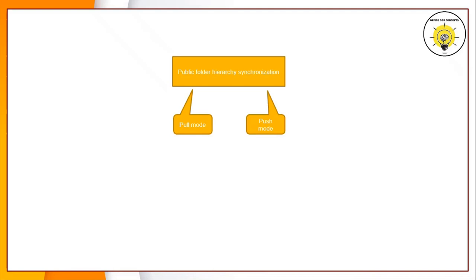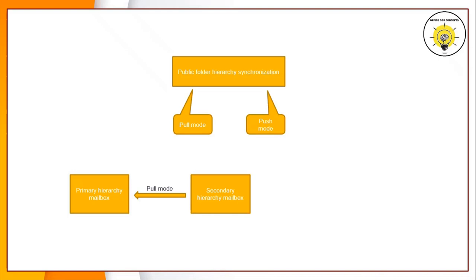The public folder hierarchy synchronization is divided into two categories: pull mode and push mode. In pull mode, hierarchy replication is driven by secondary hierarchy mailboxes. At a regular interval, the secondary public folder mailboxes connect to the primary public folder mailboxes so that they can pull the changes done within the hierarchy. For example, if a new public folder is created or a folder is created within the public folder, the secondary mailboxes will connect to the primary hierarchy mailboxes and pull all these changes.